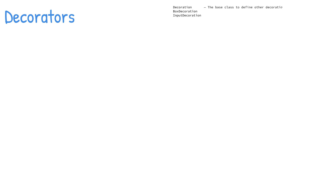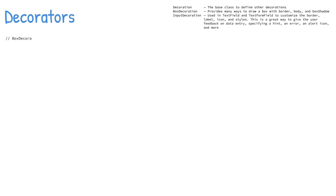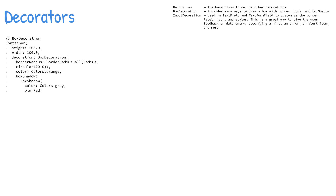Decorators help to convey a message depending on the user's interaction, or customize the look and feel of a widget. There are different types of decorators for each task. Decoration is the base class to define other decorations. Box decoration provides many ways to draw a box with a border, body, and box shadow.